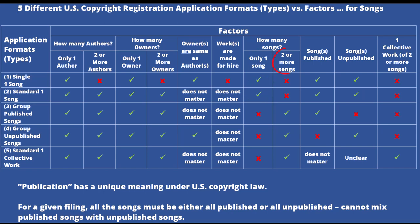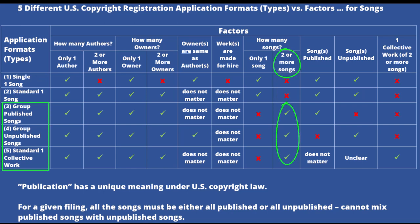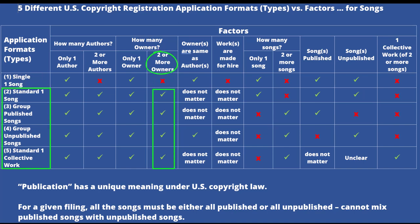Whereas, in contrast, if you had two or more songs you were looking to register, you can see that those first two copyright registration applications would not work. Instead, you'd have to look at one of the bottom three. Or if you had two or more owners, the single application — the 'one work by one author' copyright registration application — would not work. Instead, you'd have to look to one of the other four approaches if you had two or more owners.